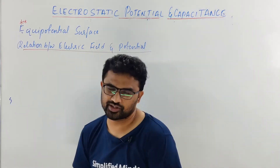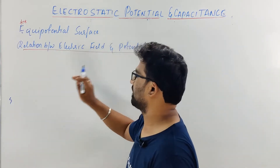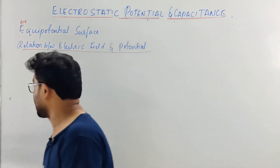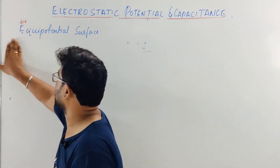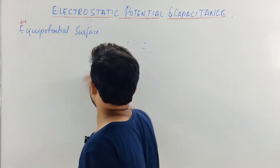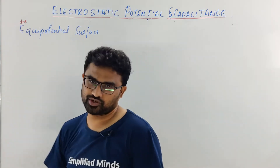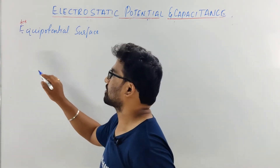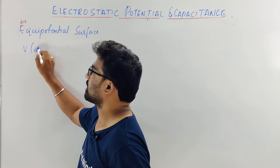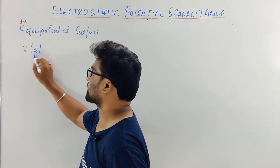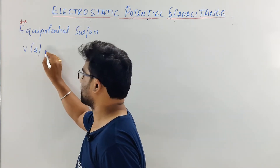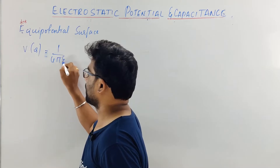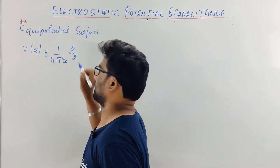So what is Equipotential Surface? It's very simple. Let's take the first topic — that is Equipotential Surface. As the word says, it's 'equi-potential.' So let's see what are the factors on which potential depends. Potential at distance R is defined by the formula: 1 by 4π epsilon-naught, Q divided by R.